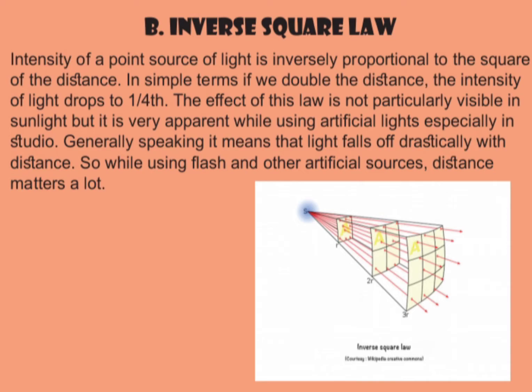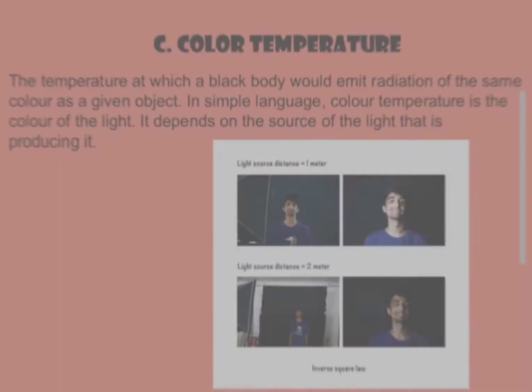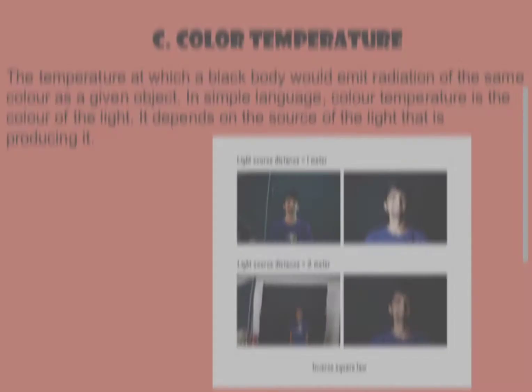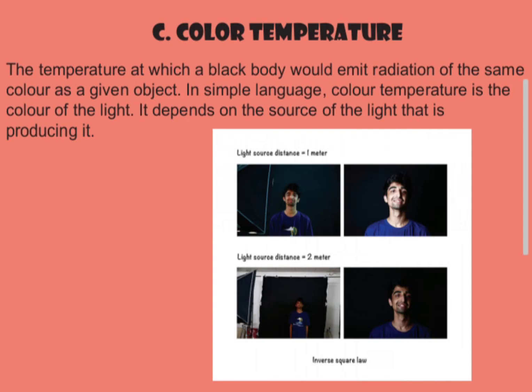The inverse square law states that the intensity of a point source of light is inversely proportional to the square of the distance. In simple terms, if we double the distance, the intensity of light drops to one quarter. The effect of this law is not particularly visible in sunlight, but it is very apparent when using artificial lights, especially in a studio. Light falls off drastically with distance, so when using flash or other artificial sources, distance matters a lot.